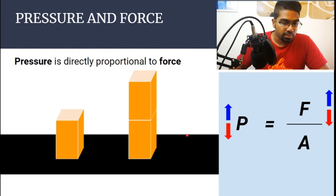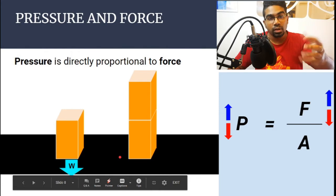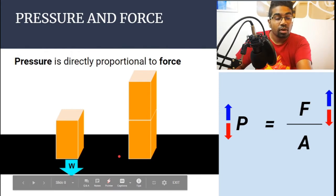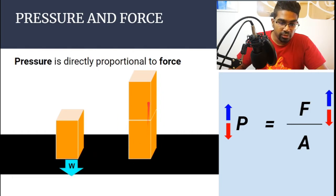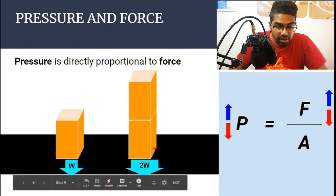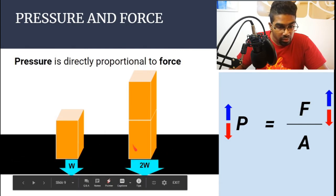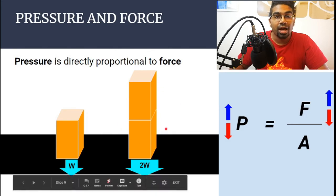Let's look at these two blocks. The force exerted by one block on the surface is its weight, because nobody is pushing the block down — it's just sitting on the surface. On the right side, we have two blocks instead of one, so the force will be two times the weight. The area of contact between the block and the surface is the same for both. Since the force on the right is double, the pressure on the right will be double as well. So higher force means higher pressure.